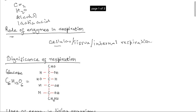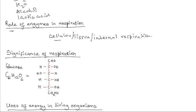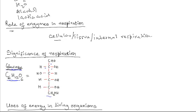What is the significance of respiration? Energy is locked in the chemical bonds of food substances, for example glucose. Looking at the structural formula of glucose, there are many chemical bonds that contain energy. During respiration, these chemical bonds are broken down and energy is released to be utilized by organisms.